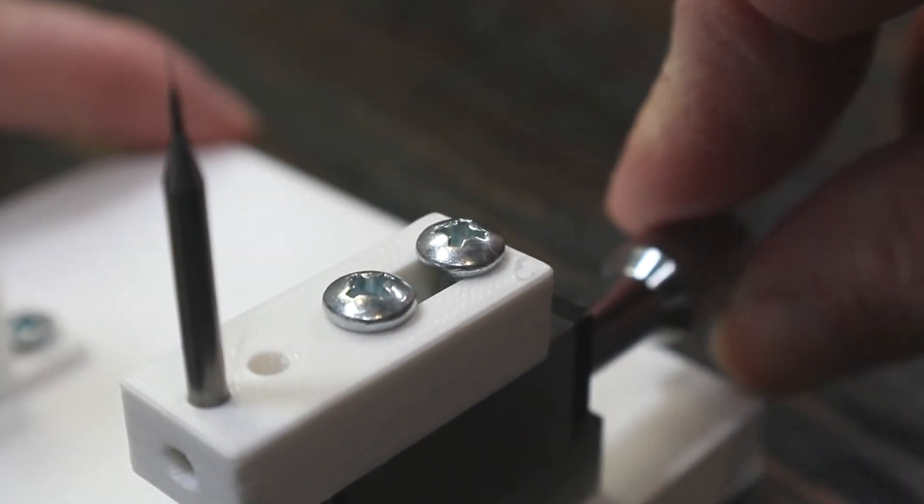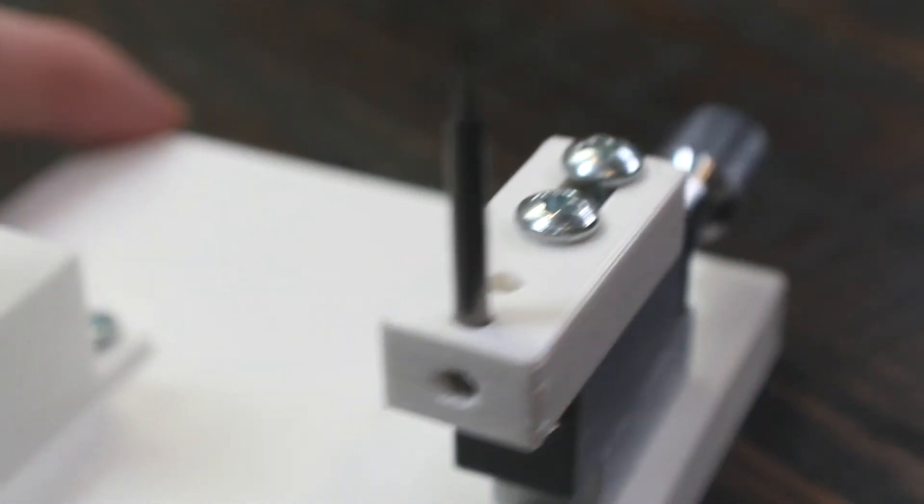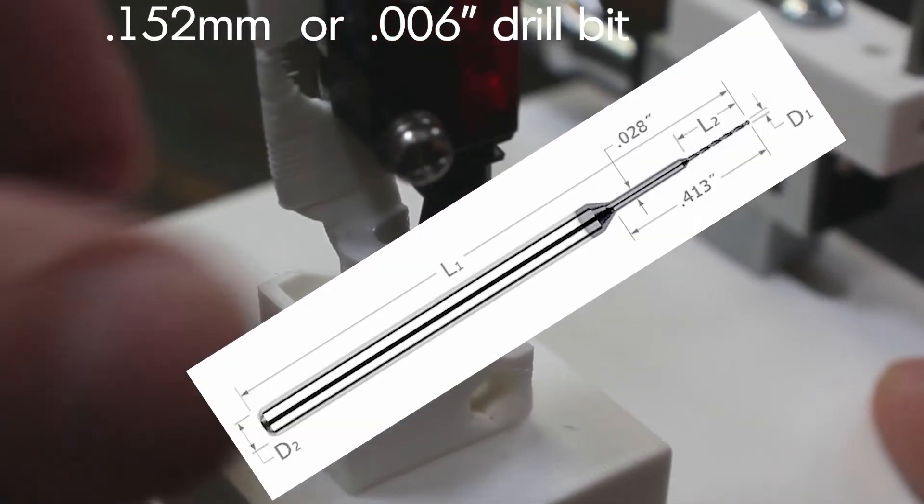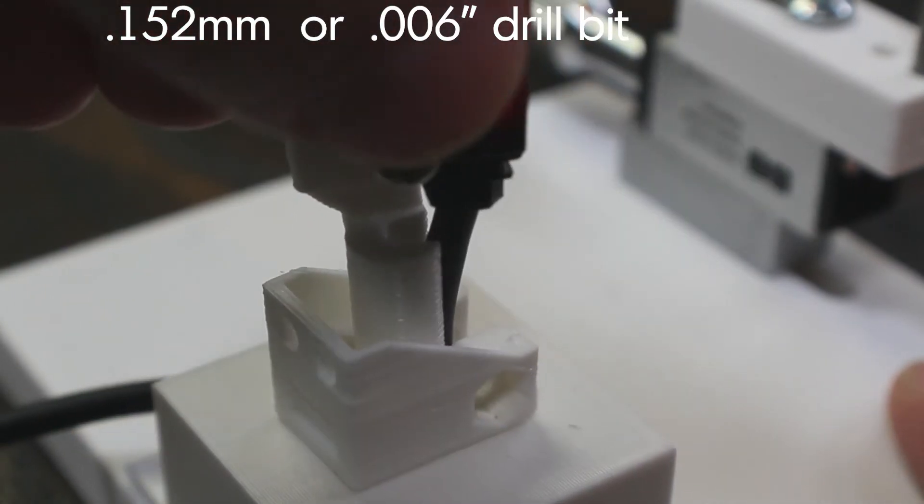To demonstrate this sensor I have the smallest drill bit that I could find. It's roughly 0.152 mm or about 0.006. It's very, very small.